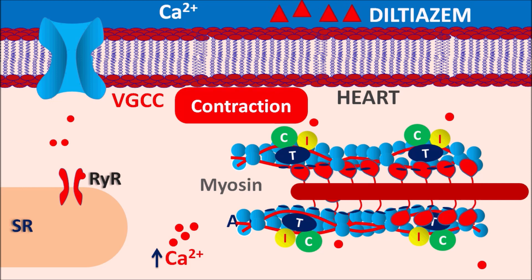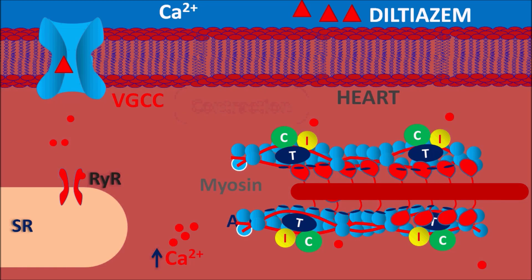Diltiazem is a calcium channel blocker — it blocks voltage-gated calcium channels, preventing contraction. This reduces cardiac work and cardiac oxygen consumption, relieving angina pain and chest congestion. It also acts on the vascular smooth muscle, blocking voltage-gated calcium channels, preventing vascular smooth muscle contraction, leading to vasodilation and decreased blood pressure. That is why Diltiazem is used in hypertension and chronic stable angina.